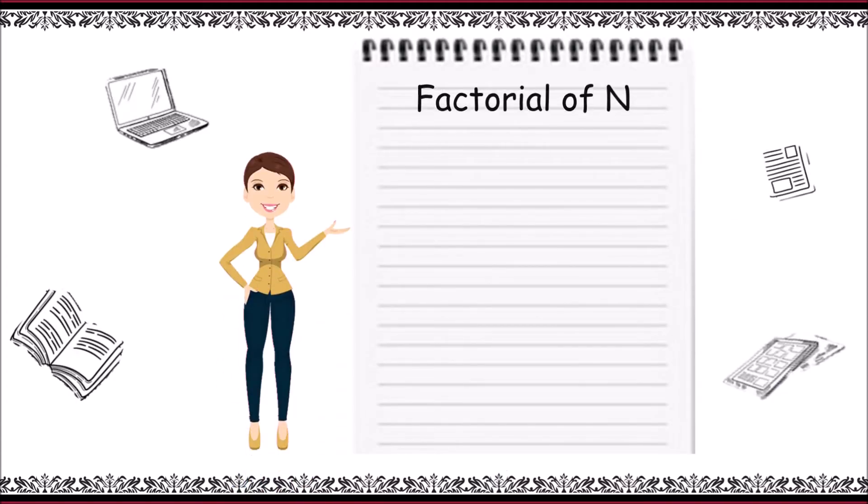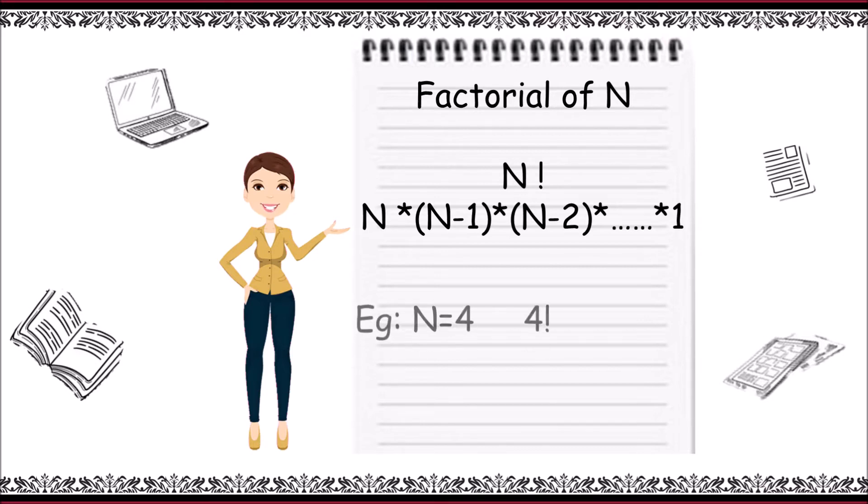The factorial of n is denoted with an exclamatory symbol and the product goes like n into the next decremented value of n, with further decremented value of n—that is n minus 2—so on up to 1. Consider an example of 4: 4 factorial is defined as 4 into 3 into 2 into 1, and the result is 24.